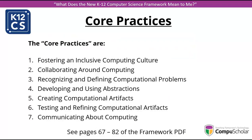There are seven core practices identified: inclusive computing culture, collaboration around computing, recognizing and defining computational problems, developing and using abstractions, creating computational artifacts, testing and refining artifacts, and communication about computing. We won't go into great detail on each because there are many pages in the framework about each one. If you're interested, open the 300-page PDF — starting at page 67, you'll find all the core practices listed with their details.